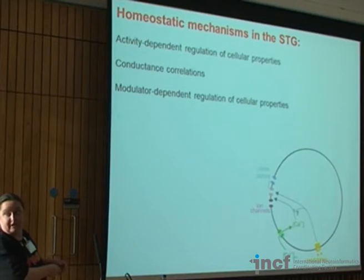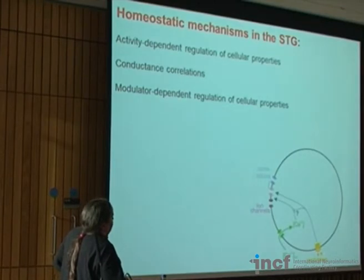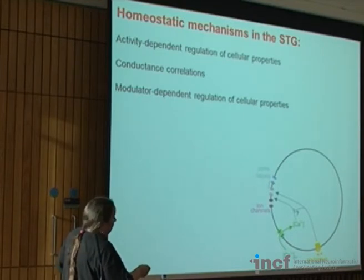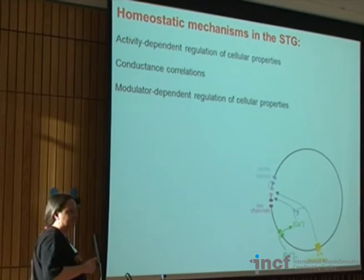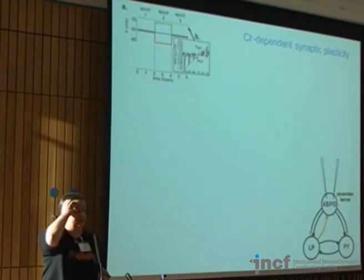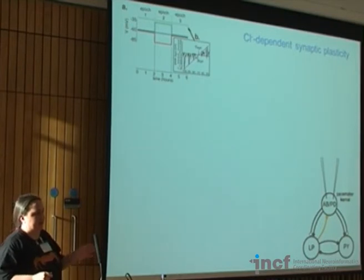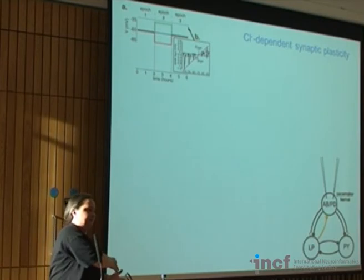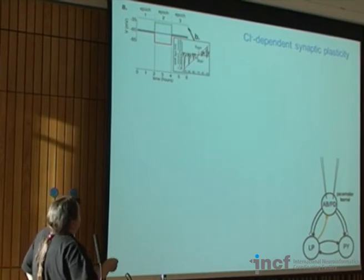Jorge also asked what exactly the system is reacting to when the nerve is cut: is it reacting to the lack of neuromodulators or the lack of electrical activity? By teasing these apart, he showed that this particular homeostatic process actually reacts to the lack of neuromodulators rather than to the loss of activity—making it an activity-independent process. So we now add a second mechanism: a modulator-dependent regulation that also affects ion channels and their correlations.